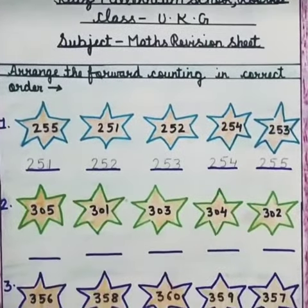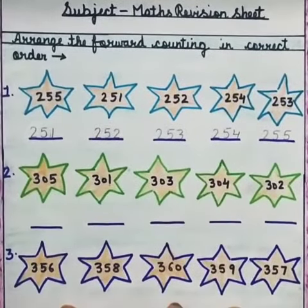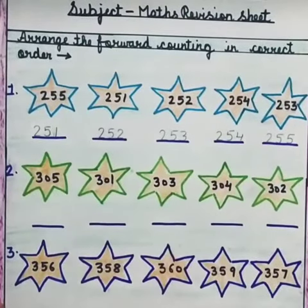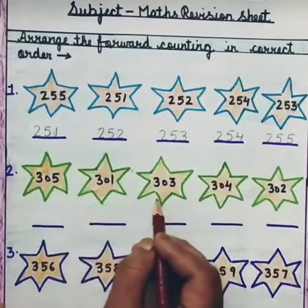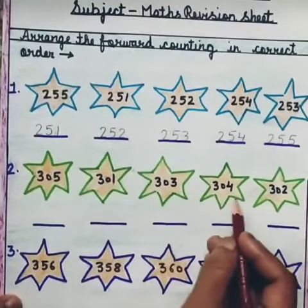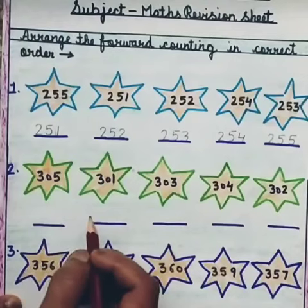Now, next, as you can see my dear kids, this is 305, 301, 303, 304 and 302.